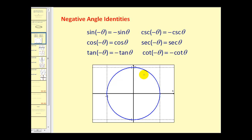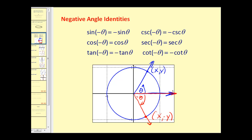Let's take a look at why this is true. If we have an angle in standard position and we call this angle theta, this point on the unit circle would be (x, y). Now if we take a look at the opposite of this angle in standard position, this point of intersection on the unit circle would be (x, negative y). Remember that on the unit circle sine theta is equal to y, so the sine of negative theta would be equal to negative y, which is equal to the opposite of sine theta.